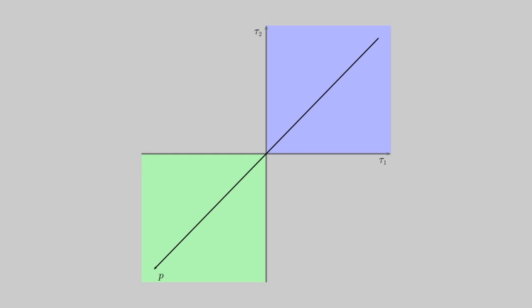This diagram illustrates principal stress space in two dimensions. Pressure increases along the diagonal line from right to left. In the blue region, the material experiences only tension, and in the green region, only compression.